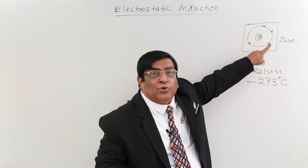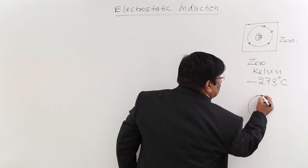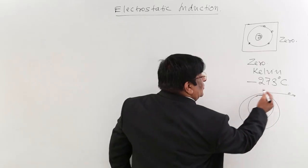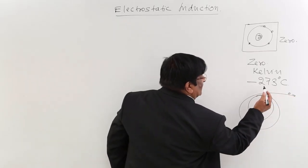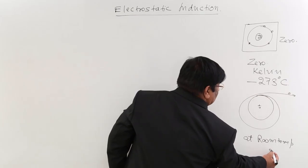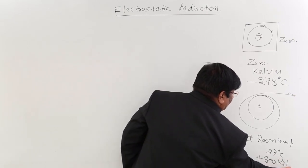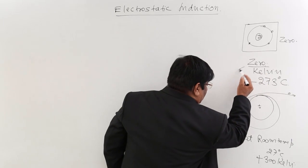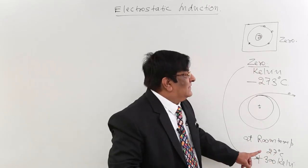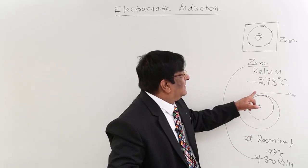If energy is more than that, when electrons are rotating and energy increases, they go out. Once an electron goes out at high temperature — and room temperature, about 27 degrees Celsius, is 300 Kelvin — that is a lot of increase from 0 Kelvin. With so much energy given to the electron, some electrons will leave their orbit and go out.